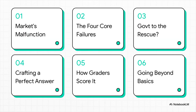Here's our game plan. First, we'll get a handle on what a market malfunction actually is. Then we'll dive into the four big reasons it happens. We'll look at whether the government can swoop in and save the day. And then — this is the important part — we'll get super practical, showing you how to build the perfect exam answer, how it gets graded, and where you can go to learn even more.